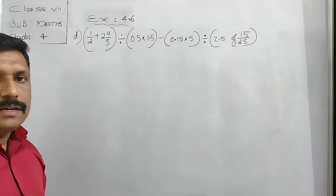Question D is the next one I am going to solve. Questions B and C are for you as homework. The question is: 1 upon 2 plus 2 and 4 upon 5, in a bracket, divided by 0.5 into 1.5, in a bracket, minus 0.15 into 5, in a bracket, then divided by 2.5 of 15 upon 25, in a bracket.